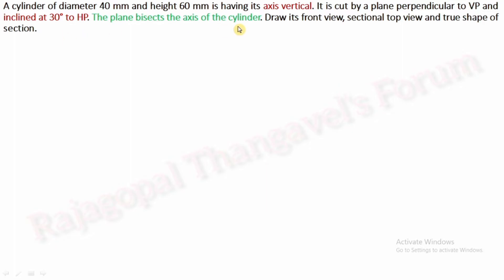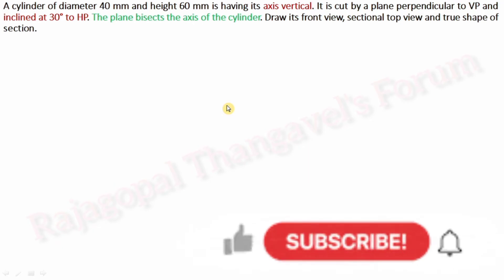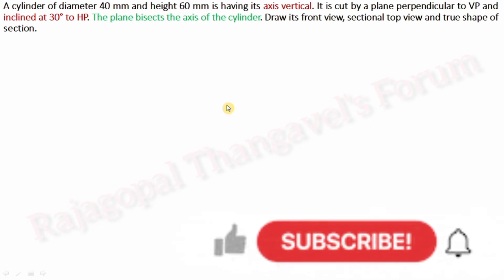Whenever you are reading the question, first you have to identify what is the top and front view of a solid. Here the axis is vertical. So if the axis of a cylinder is vertical, our top view will be a circle and front view will be a rectangle. So we will proceed our answer.